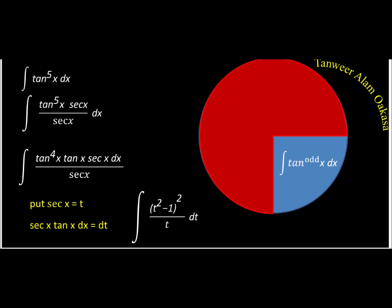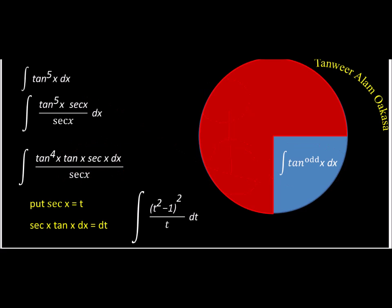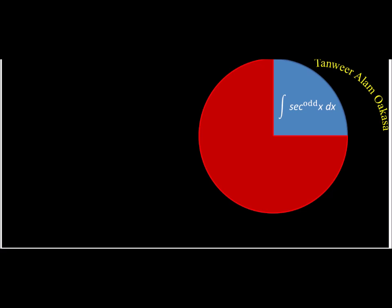To summarize: when sec is even, put tan(x) = t and sec²(x)dx becomes dt — no problem. When tan is even, convert to sec even and same substitution applies. When tan is odd, multiply and divide by sec(x), take sec(x)tan out, it becomes t and dt. All three were easy. The tough part is sec to power odd — there is no special direct method.